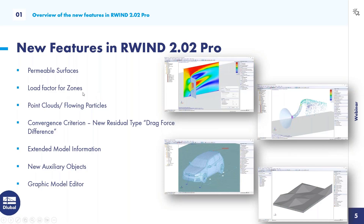We also added load factors for zones, so you can now modify loads directly in R-WIND. You can also add point clouds — these are graphical objects that track flowing particles in the transient flow analysis, giving you a clue on where the wind is coming from and where it is going. It's a quite good tool to follow your wind particles.